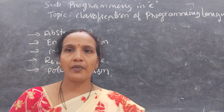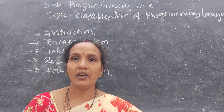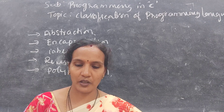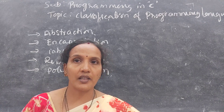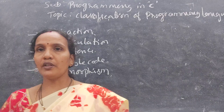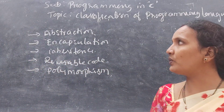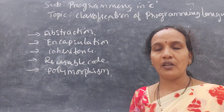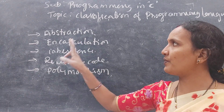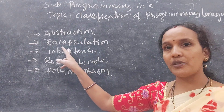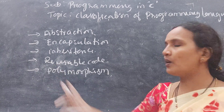Welcome back to Computer Sense class. We will continue the topic from the last class, that is object-oriented programming. In object-oriented programming, there are a few features: abstraction, encapsulation, inheritance, reusable code, and polymorphism.